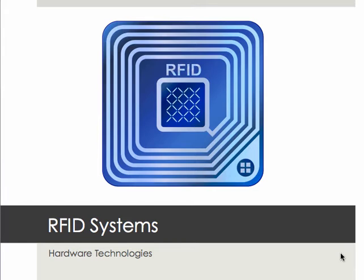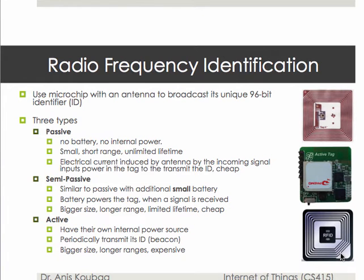I'm going to start with RFID systems because they are one of the most important platforms that have contributed to the emergence of the Internet of Things and one of the earliest devices used for this purpose. An RFID is composed of a microchip with an antenna to broadcast a unique 96-bit identifier, which is the ID.